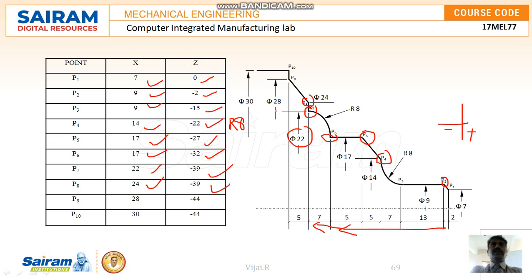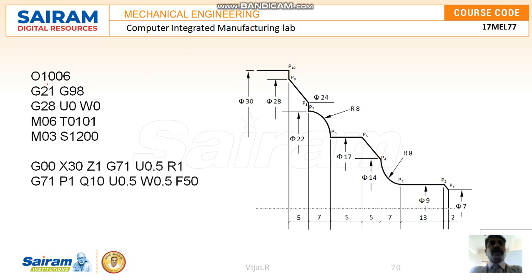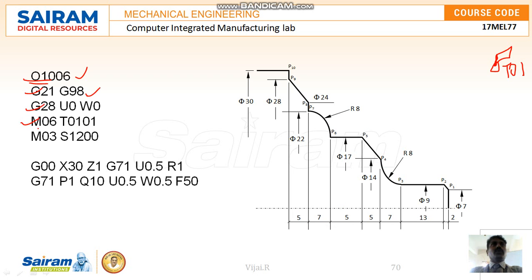Now we go for writing the program with the help of these coordinate points. The first line is the program number — O followed by a four-digit number like O1006. G21 is metric data input, G98 is feed per mm, and G28 U0 W0 returns the tool to the home reference position. Then we select the tool using M06, which rotates the tool station to the selected tool number.